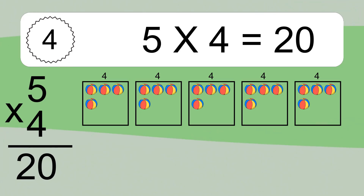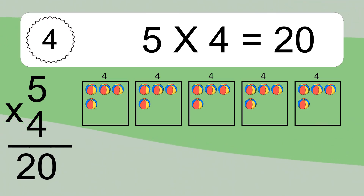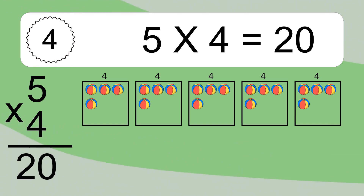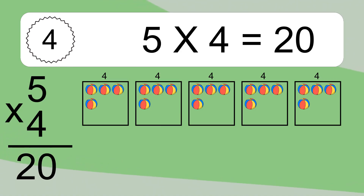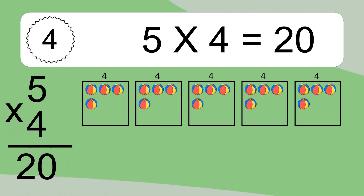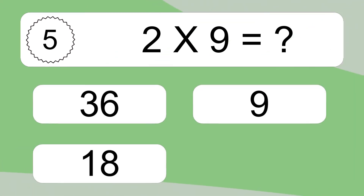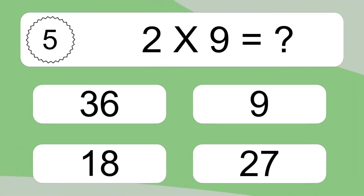We have 5 boxes, and each box has 4 colorful balls inside. If you count all the balls in all the boxes together, you will have 5 times 4 balls. This equals 20 balls.